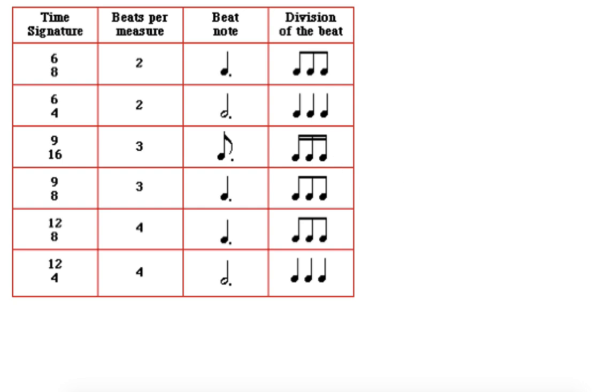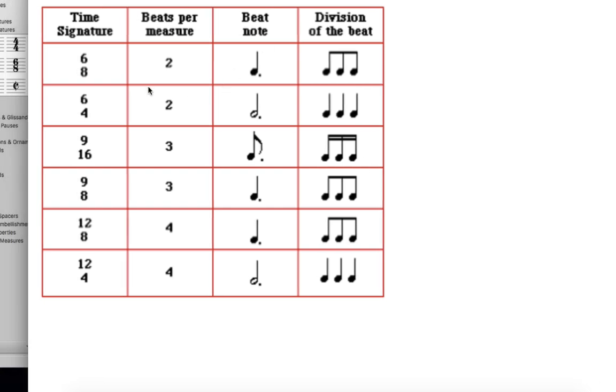Here's another graph or chart that lays this out kind of nicely. So in 6/8, beats per measure. Now what they're calling the beat is this big dotted quarter note. And then the division of the beat is the eighth note.